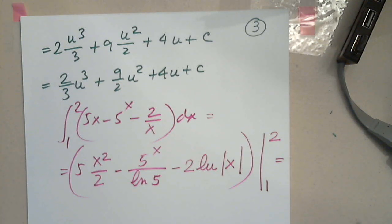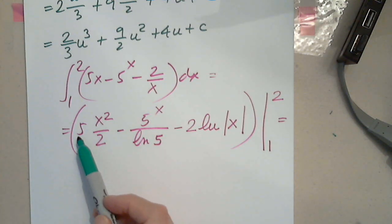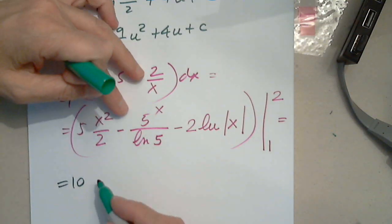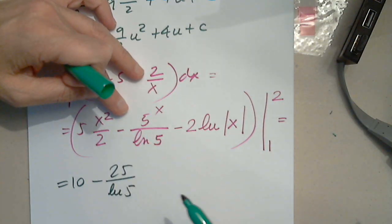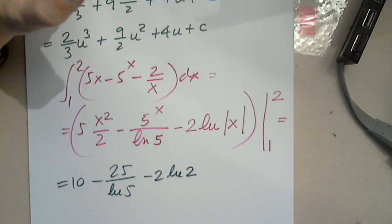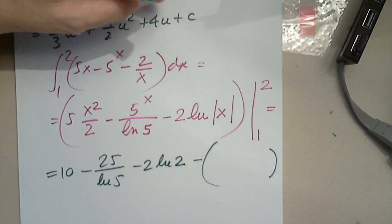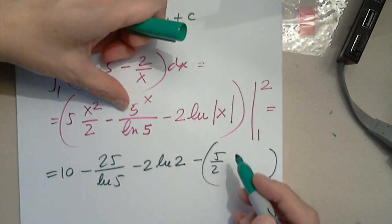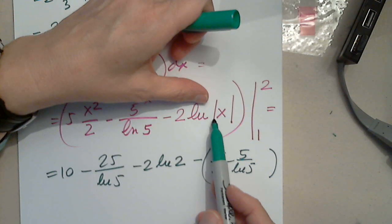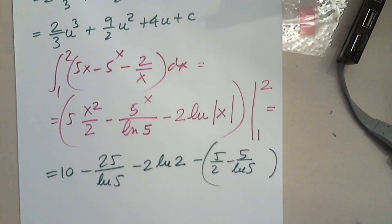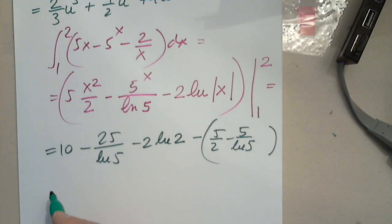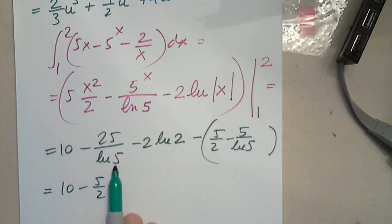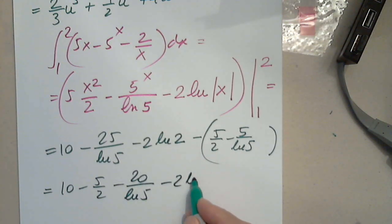Now I plug in 2: 4 divided by 2 is 2, times 5 is 10; here I have 25 over natural log 5; and this is negative 2 natural log 2. Put minus and parentheses so we don't forget to distribute. When I plug in 1, I have 5 halves; I have 5 over natural log 5; and when I plug in 1, the log term gives 0.